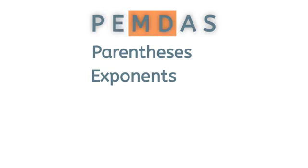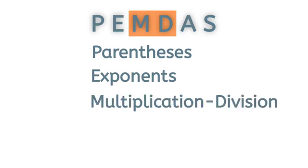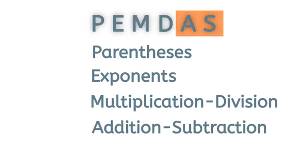M and D are multiplication and division. These operations have the same priority and should be executed from left to right. A and S are addition and subtraction. Finally, perform addition and subtraction from left to right. These operations also have the same priority and should be executed in the order they appear in the expression.